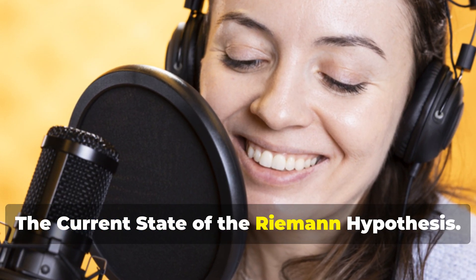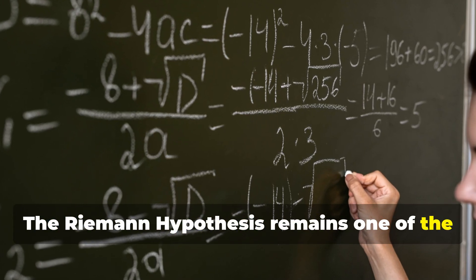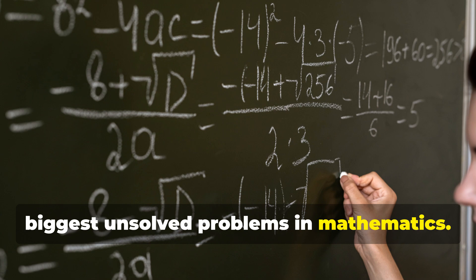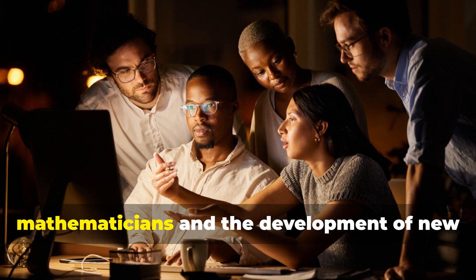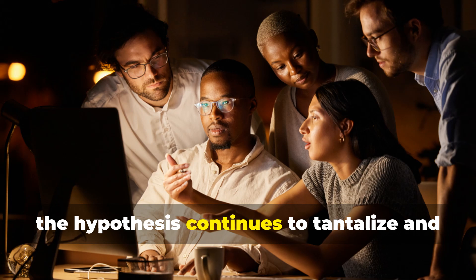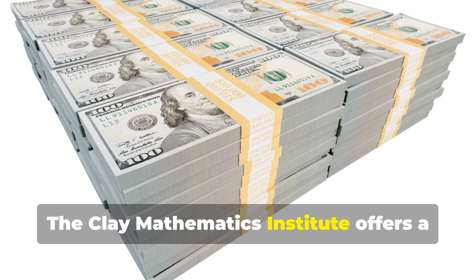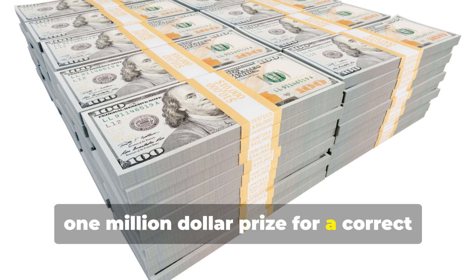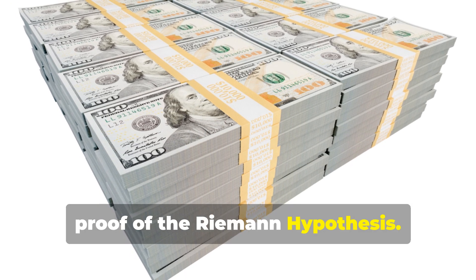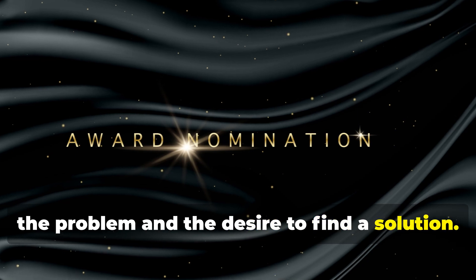The Riemann Hypothesis remains one of the biggest unsolved problems in mathematics. Despite the efforts of countless mathematicians and the development of new mathematical tools, the hypothesis continues to tantalize and challenge us. The Clay Mathematics Institute offers a $1 million prize for a correct proof of the Riemann Hypothesis. This prize highlights the importance of the problem and the desire to find a solution.